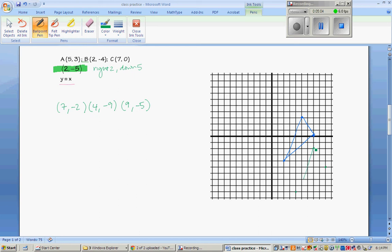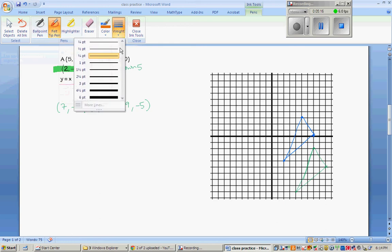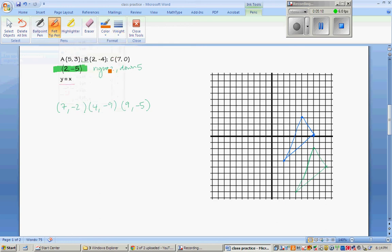We need to reflect this over the line y equals x. And you need to remember what that line looks like. So we're going to get a bright orange. And we're going to make a nice thick line. Remember, it goes from one corner of the graph to the other with a positive slope. So it's this line here. That is your mirror.